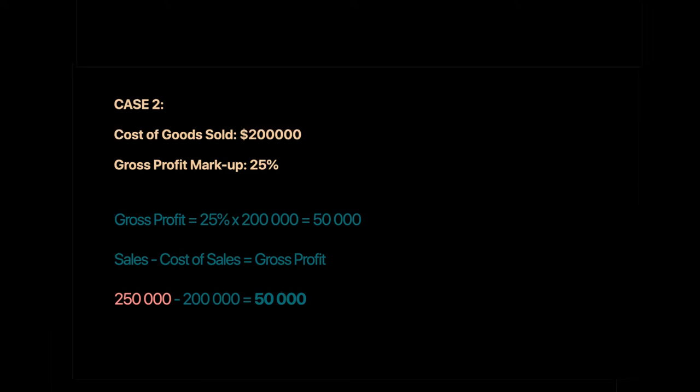Those were straightforward cases where the denominator was given and we simply applied the ratio. But on exams, the given information may not be directly available and you still have to use these ratios. Case 3: Sales = 600,000 and gross profit markup = 20%. The issue here is that markup is a percentage of cost of sales, which is not given — only sales is known.